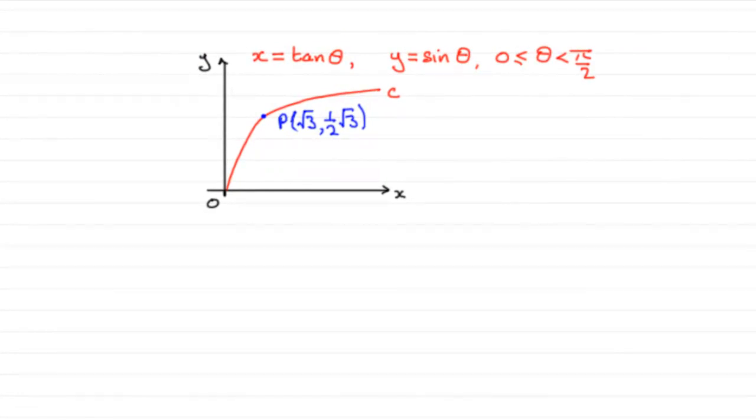In this part of the question we're given part of this curve C which is defined by the parametric equations x = tan θ and y = sin θ, where θ is greater than or equal to 0 but less than π/2 radians. We have a point P on this curve C, P being (√3, (1/2)√3).